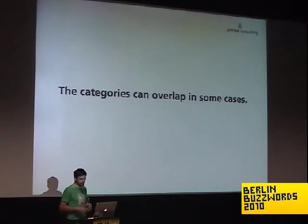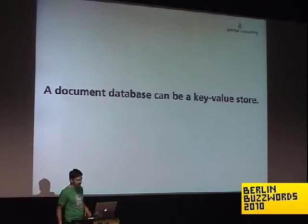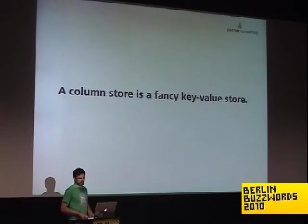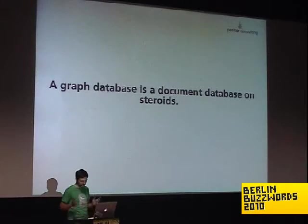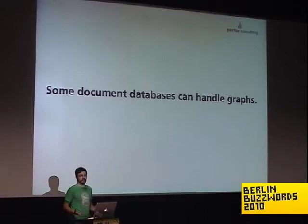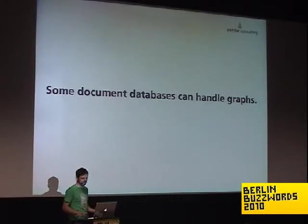The categories I was talking about overlap in some cases. A document database can be used as a key-value store, and a lot of people use it that way. A column store is just a fancy key-value store — but it's really fancy. A graph database is basically a document database on a lot of steroids. And some document databases can handle graphs: Riak has somewhat built-in support for links between documents, and you can fetch them in one go — which makes Riak kind of unique in the world of document databases.